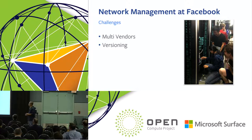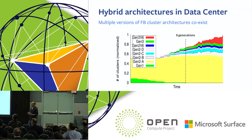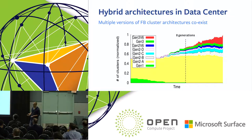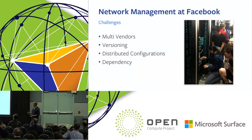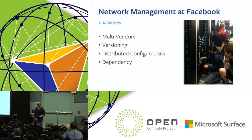Another challenge is the coexistence of different network architectures. This graph shows how many different kinds of network architecture exist in our data center at a given point in time. At some point, we were hosting eight different kinds of network architecture simultaneously. Our network management system needs to ensure all these architectures can be provisioned and maintained correctly. There are also challenges around atomic config distribution and dependency — for example, BGP masks — but in the interest of time I won't go into detail here.